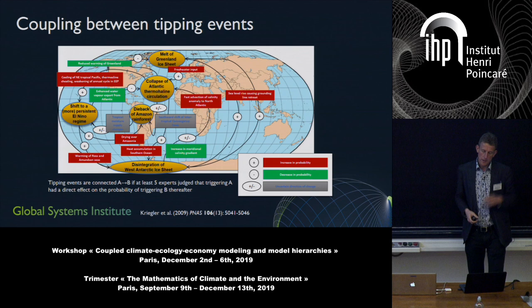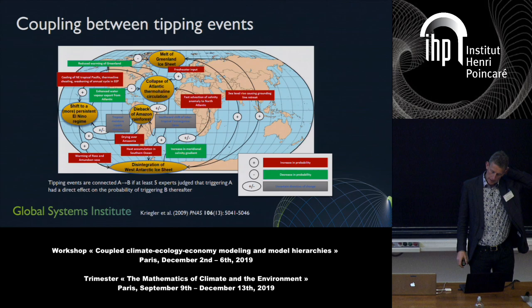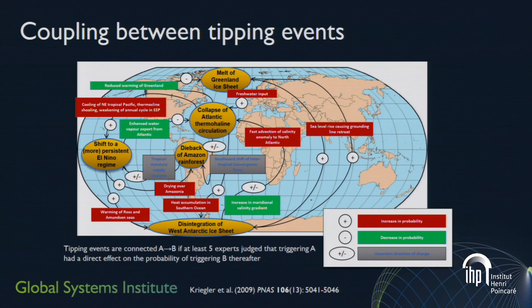In the expert elicitation 10 years ago, we asked experts about potential causal interactions between a subset of these tipping events. A plus sign means if you tip one thing it increases the likelihood of tipping the other; a minus decreases the likelihood. The Greenland ice sheet melt increases the likelihood of collapsing the overturning. If you were to collapse the overturning first, you'd get less heat up here, slowing the melting of Greenland — a negative feedback. But there are slightly more pluses than minuses on the map, which is concerning because those are the interactions that could cascade, where tipping one thing increases the likelihood of tipping another.